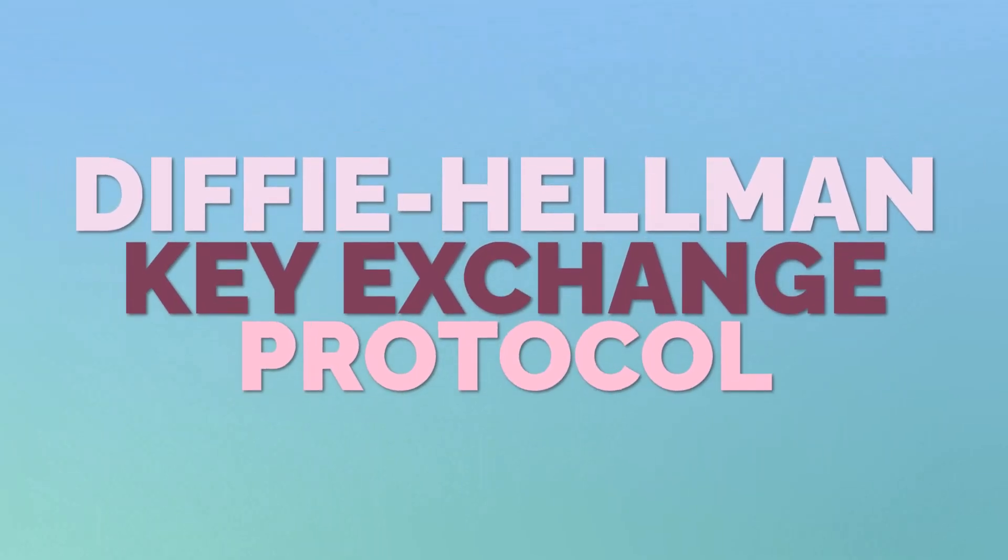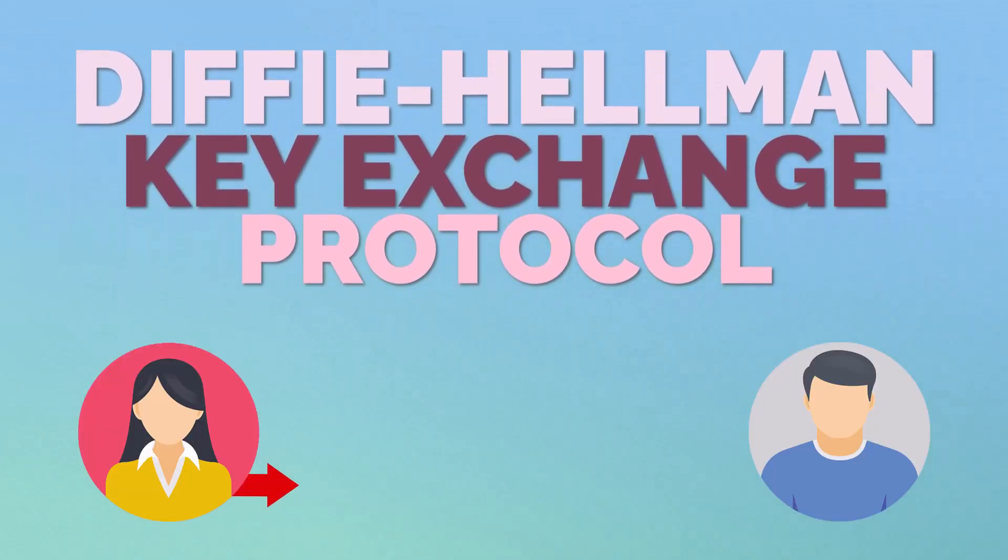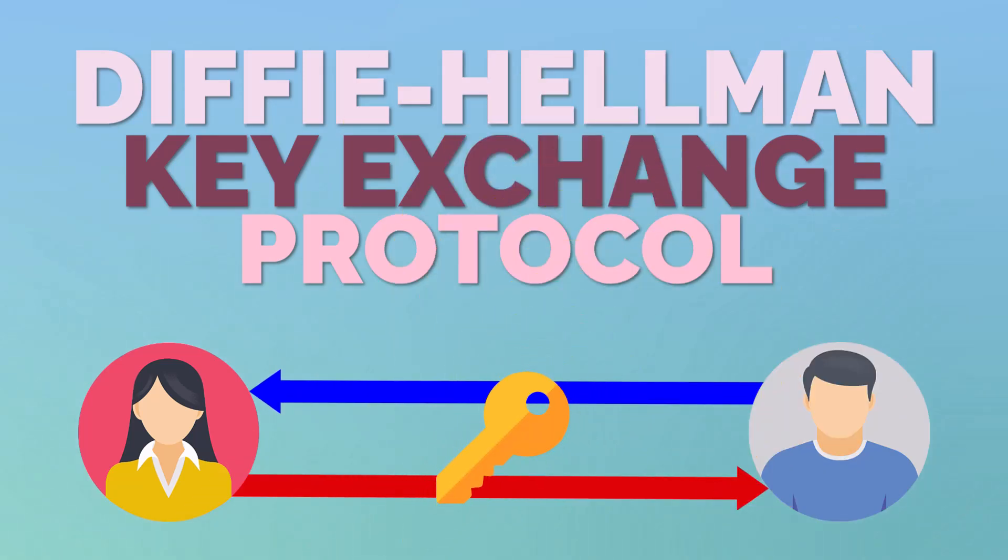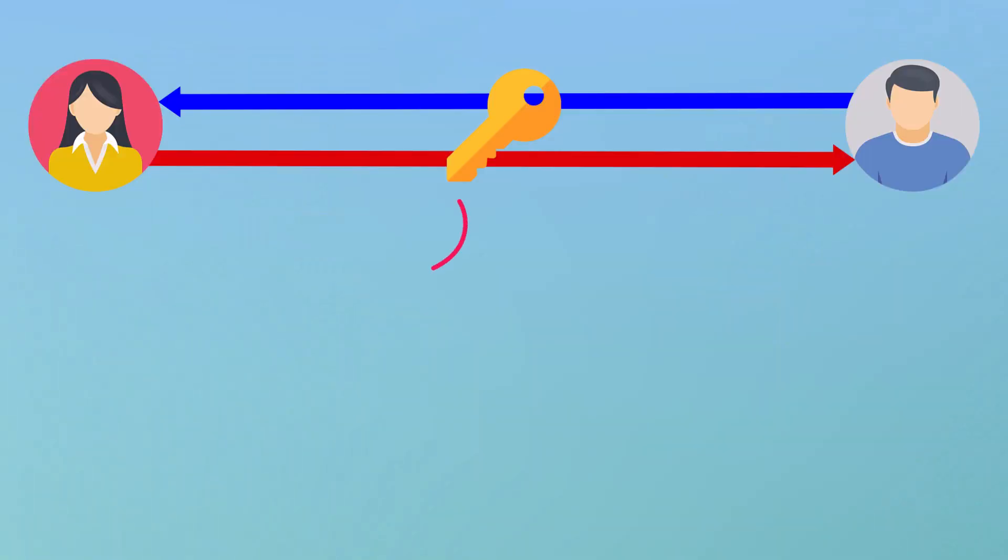In the Diffie-Hellman key exchange protocol, Alice and Bob securely establish a shared secret key after having mutually agreed upon the prime number p and a generator value alpha.